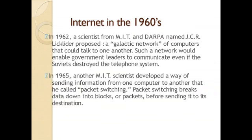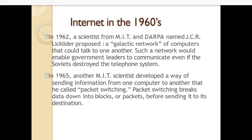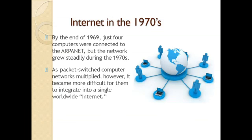In 1962, a scientist from MIT and DARPA named J.C.R. Licklider proposed a galactic network of computers that could talk to one another. Such a network would enable government leaders to communicate even if the Soviets destroyed the telephone system. In 1965, another scientist developed a way of sending information from one computer to another called packet switching — breaking data down into blocks or packets before sending it to the destination node.